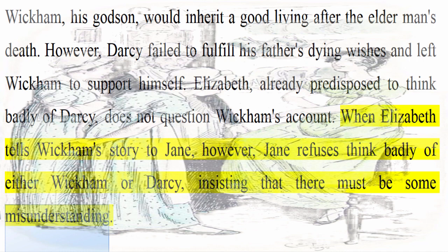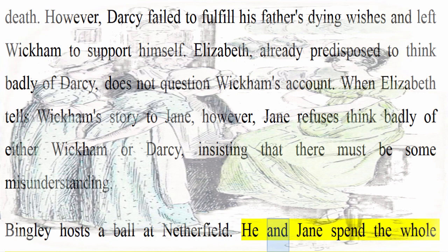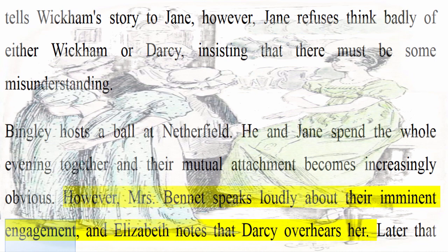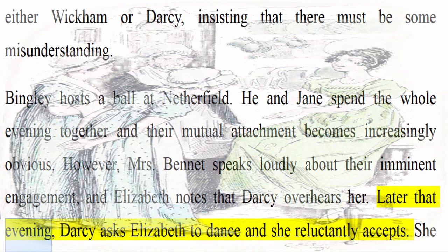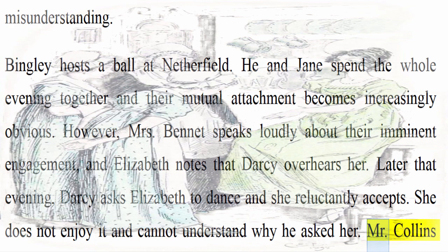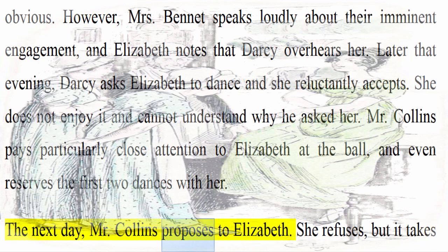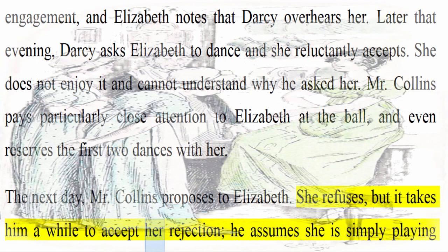Bingley hosts a ball at Netherfield. He and Jane spend the whole evening together and their mutual attachment becomes increasingly obvious. However, Mrs. Bennet speaks loudly about their imminent engagement, and Elizabeth notes that Darcy overhears her. Later that evening, Darcy asks Elizabeth to dance and she reluctantly accepts. She does not enjoy it and cannot understand why he asked her. Mr. Collins pays particularly close attention to Elizabeth at the ball and even reserves the first two dances with her. The next day, Mr. Collins proposes to Elizabeth. She refuses, but it takes him a while to accept her rejection; he assumes she is simply playing coy, as he believes females do.